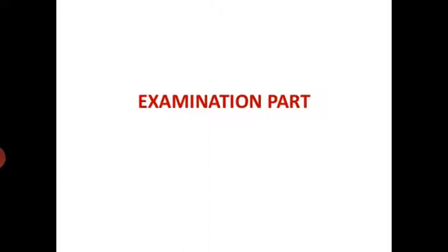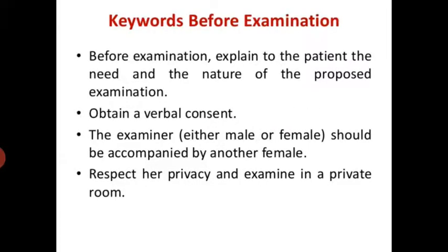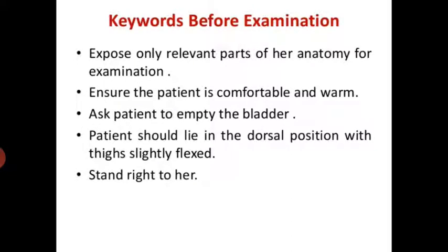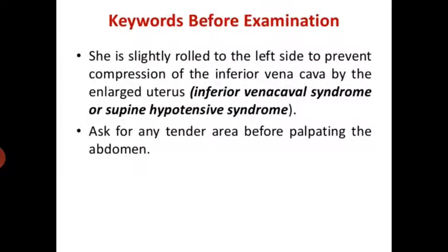Examination: before examination, explain to the patient the need and nature of the proposed examination and obtain verbal consent. The examiner, either male or female, should be accompanied by another female. Respect her privacy and examine in a private room. Expose only relevant parts for examination. Ensure the patient is comfortable and warm. Ask the patient to empty the bladder. The patient should lie in the dorsal position with the thigh slightly flexed; she is slightly rolled to the left side to prevent compression of the inferior vena cava by the enlarged uterus. Ask for any tender area before palpating the abdomen.